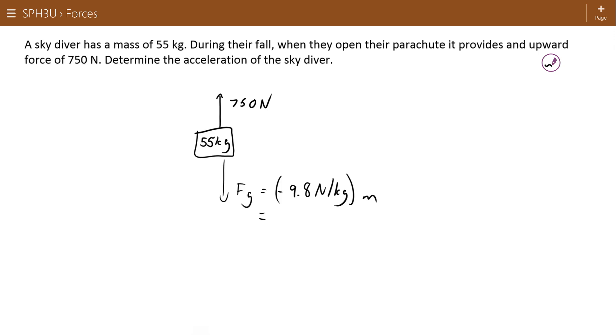This isn't like that last situation where I said gravity and normal force cancel because there's no normal force. So negative 9.8 Newtons per kilogram and a mass of 55 kilograms. So I get a gravitational force of negative 539 Newtons. So 750 up, 539 down.